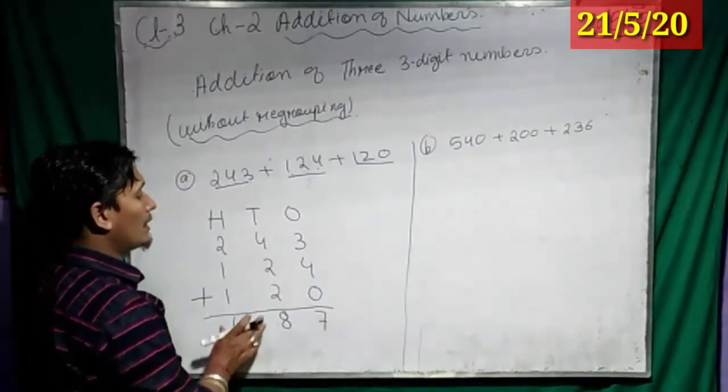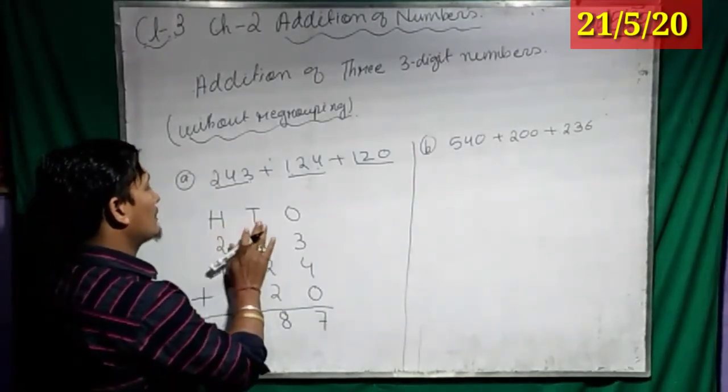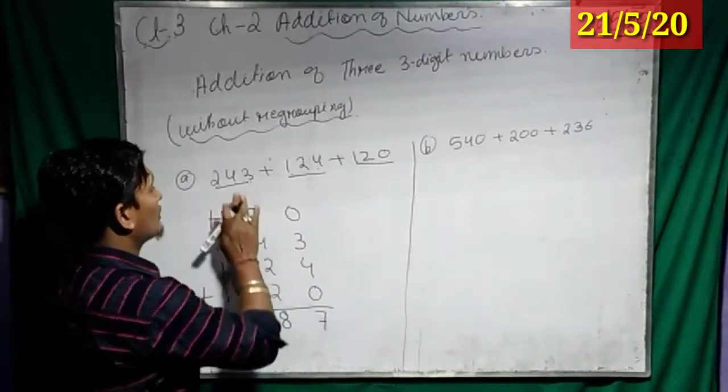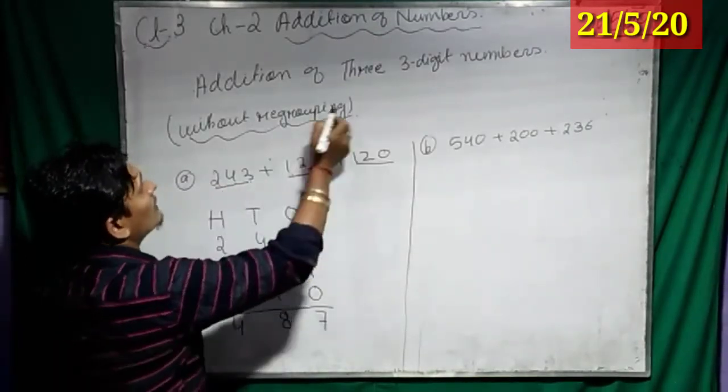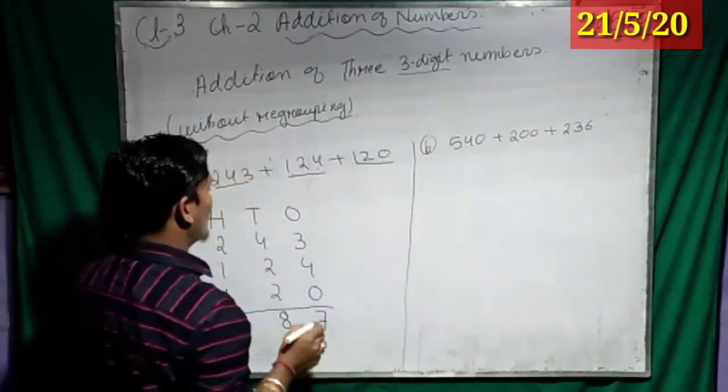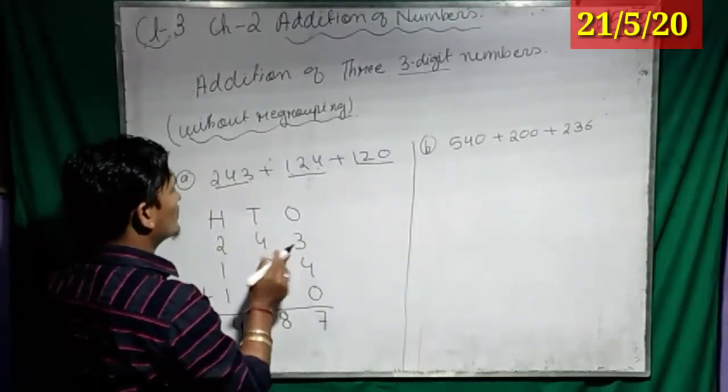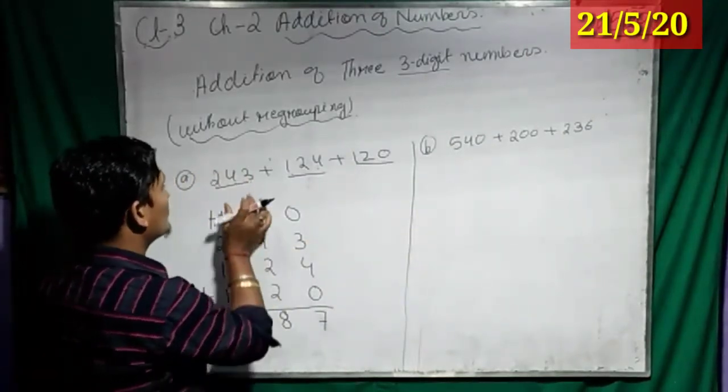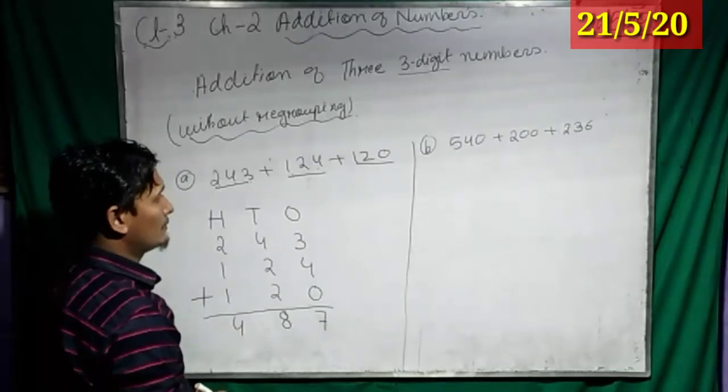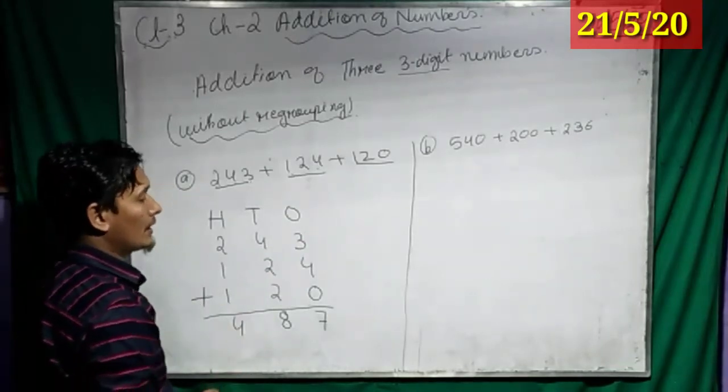So, this is the way how to arrange number. First, we have to write H-T-O-Y, because we are doing with 3-digit number. So we will write H-T-O-Y, this is the place value chart and we will write the number below the place value chart. Got it, children?